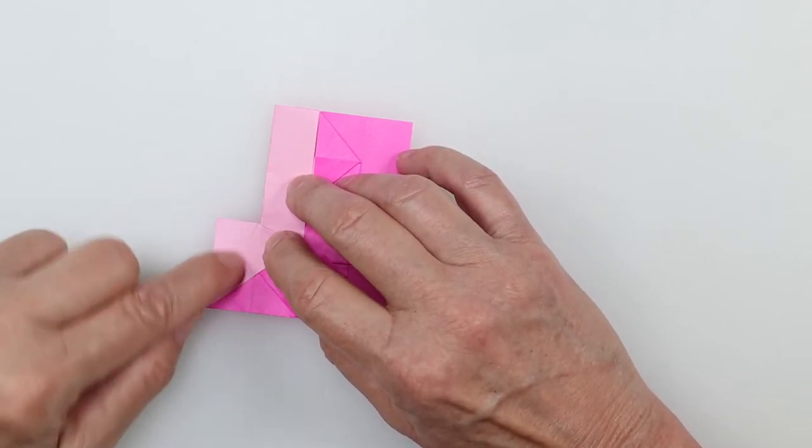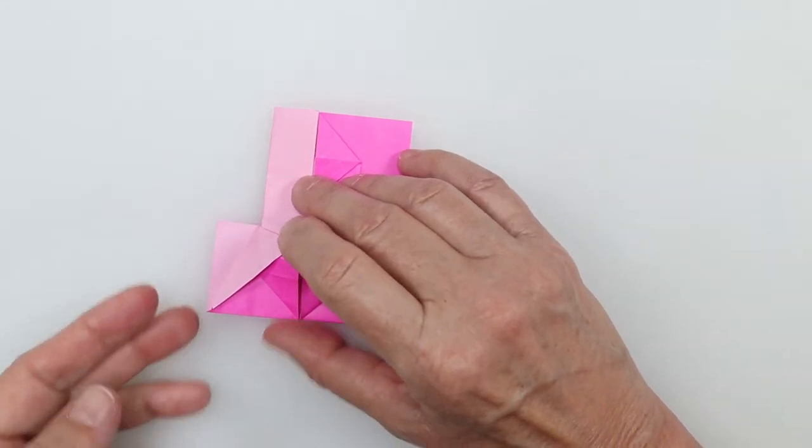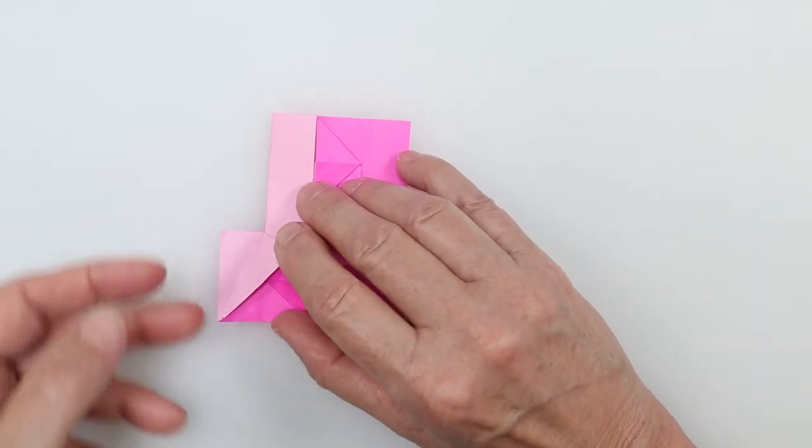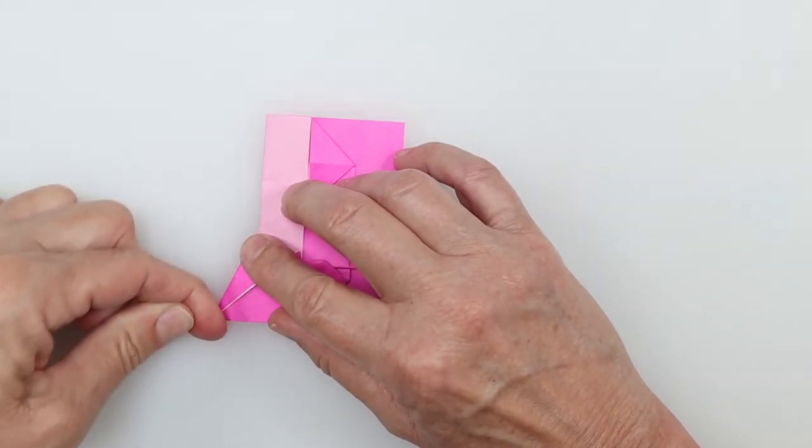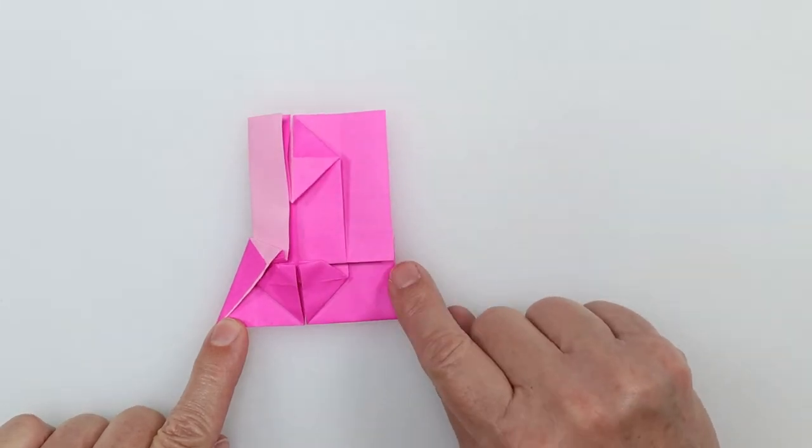Flatten it to a nice, sharp angle going outwards. And then you take this layer that's left. This little layer just gets folded right over it. And just crease that.